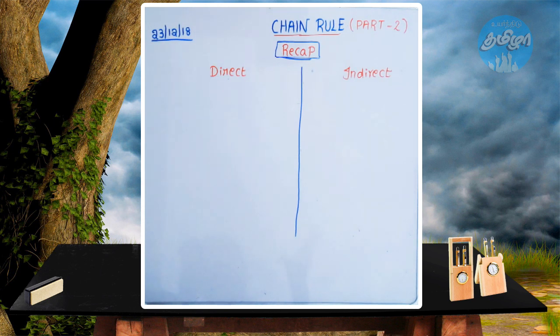In the chain rule, we will check the two conditions: one direct and one indirect. If you look at the direct, it will be indirect.